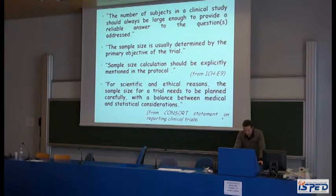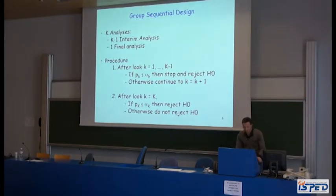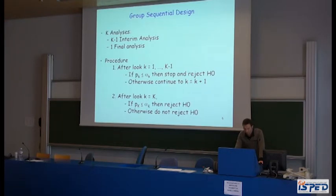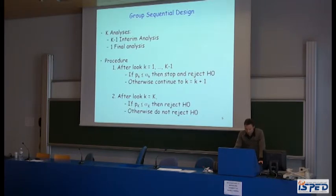I will quickly review the definition of group sequential design. Group sequential trials allow early stopping for efficacy and/or futility. They are based on the concept of performing k analyses: k-1 interim analyses and one final analysis. At each analysis, a statistical test is performed at the alpha-k level. If the p-value p-k is lower than alpha-k, then stop and reject H0; otherwise, continue to the next step, until the final analysis.